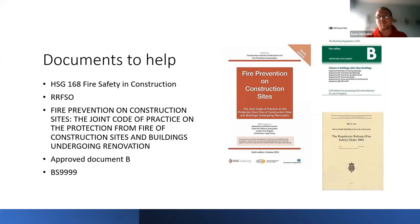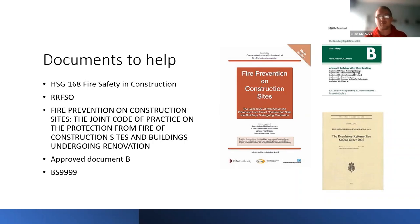Useful documents include HSG 168 Fire Safety in Construction — recently revised — which provides guidance on managing fire safety during the construction phase and at handover. The Regulatory Reform (Fire Safety) Order is the key regulatory document, and the JCoP — Joint Code of Practice for Protection from Fire of Construction Sites and Buildings Undergoing Renovation — is widely used by insurers for higher-value buildings and goes above and beyond HSG 168.